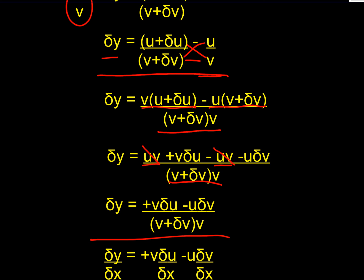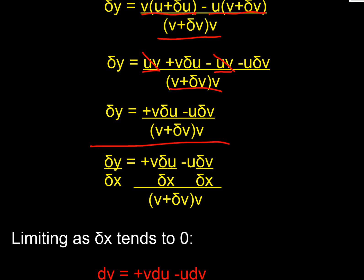What we're interested in is finding δy over δx, so we're going to divide through by δx. Here we have δy/δx equals v times δu/δx minus u times δv/δx. On the bottom, we've got (v + δv) times v.